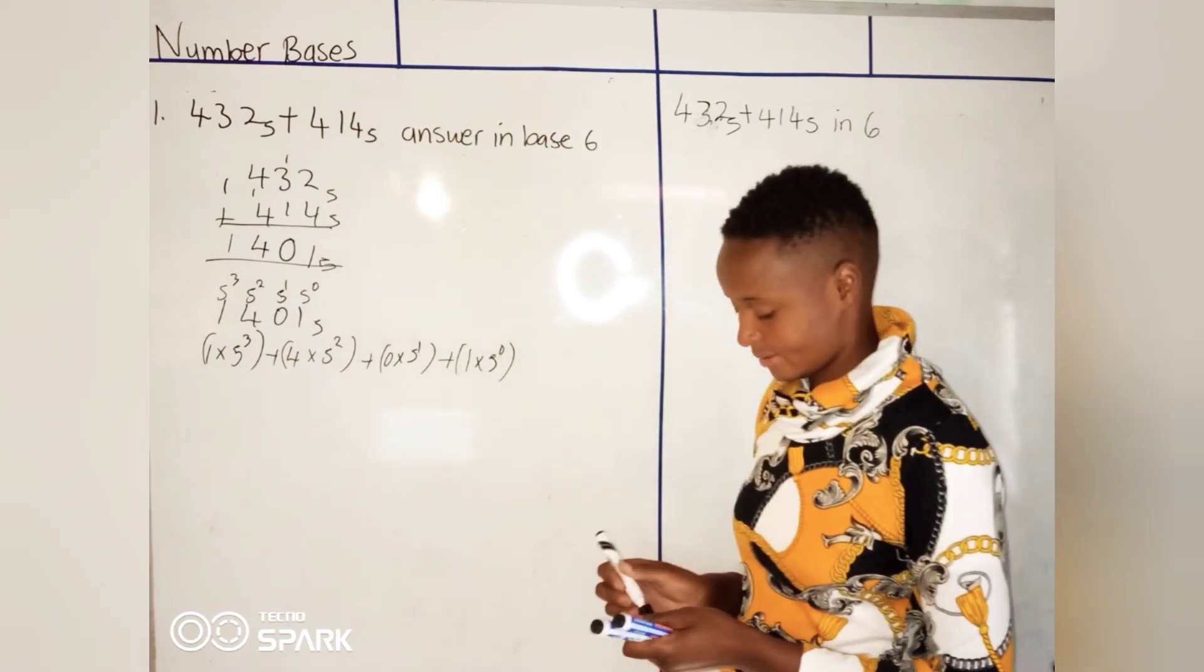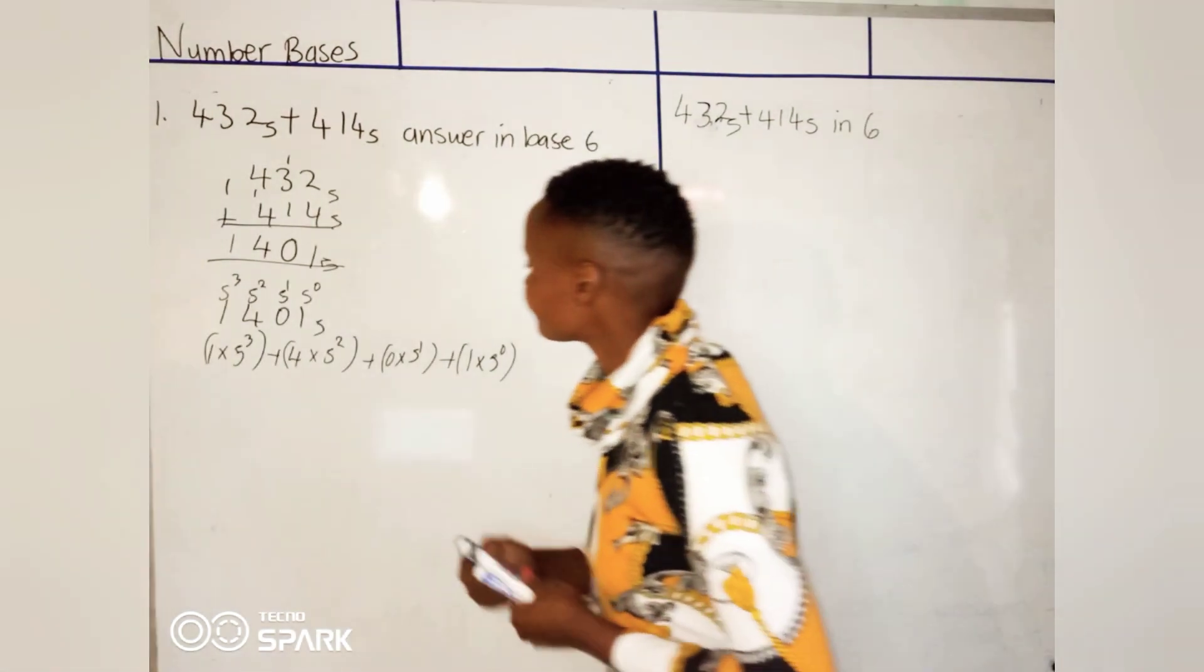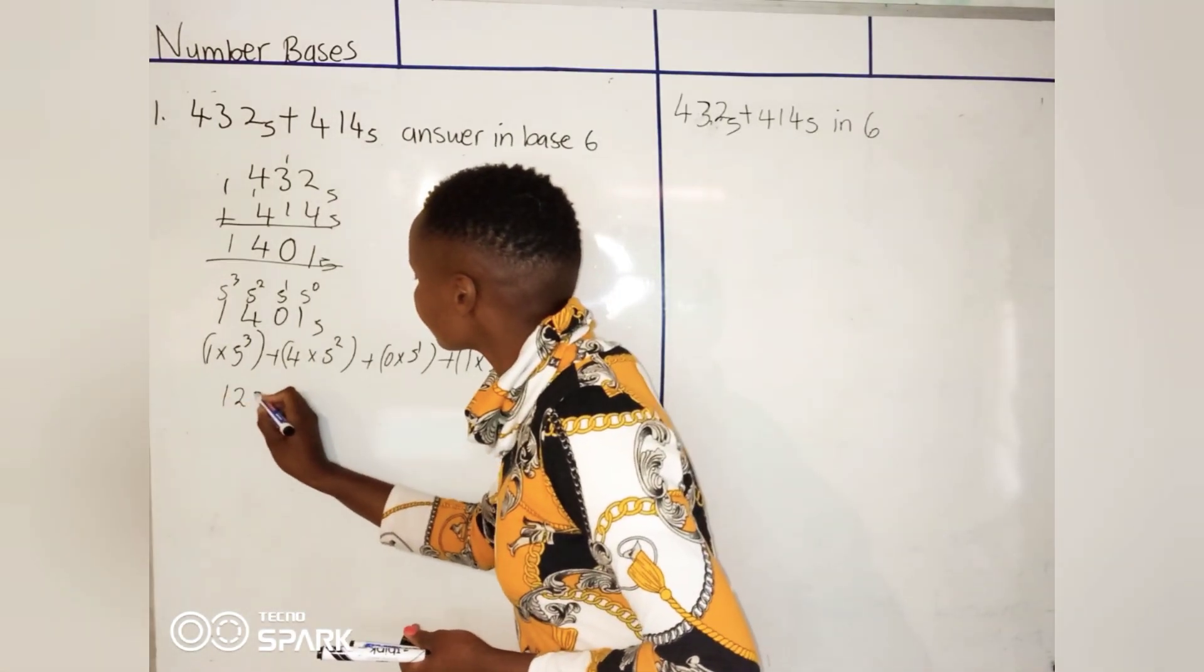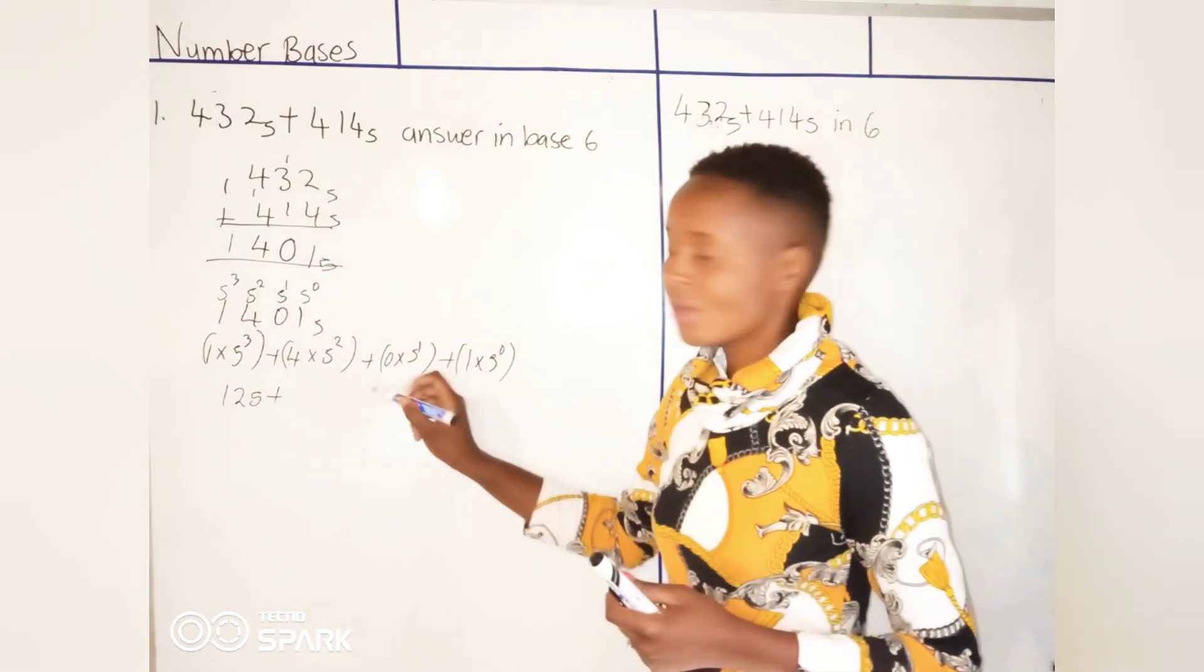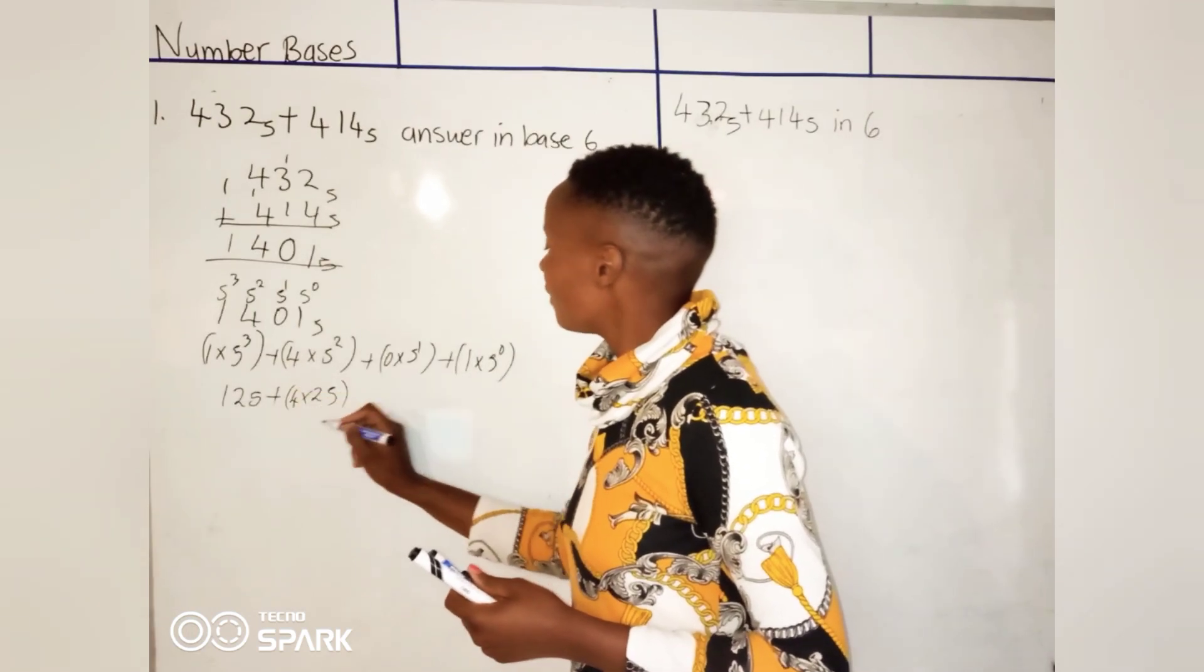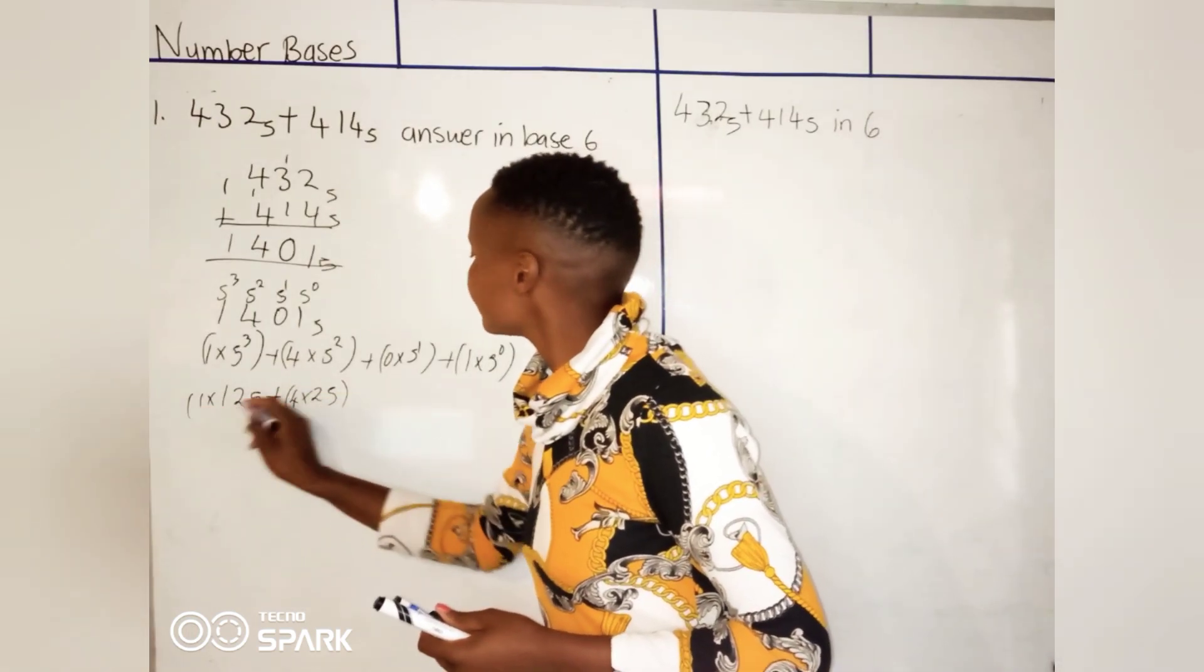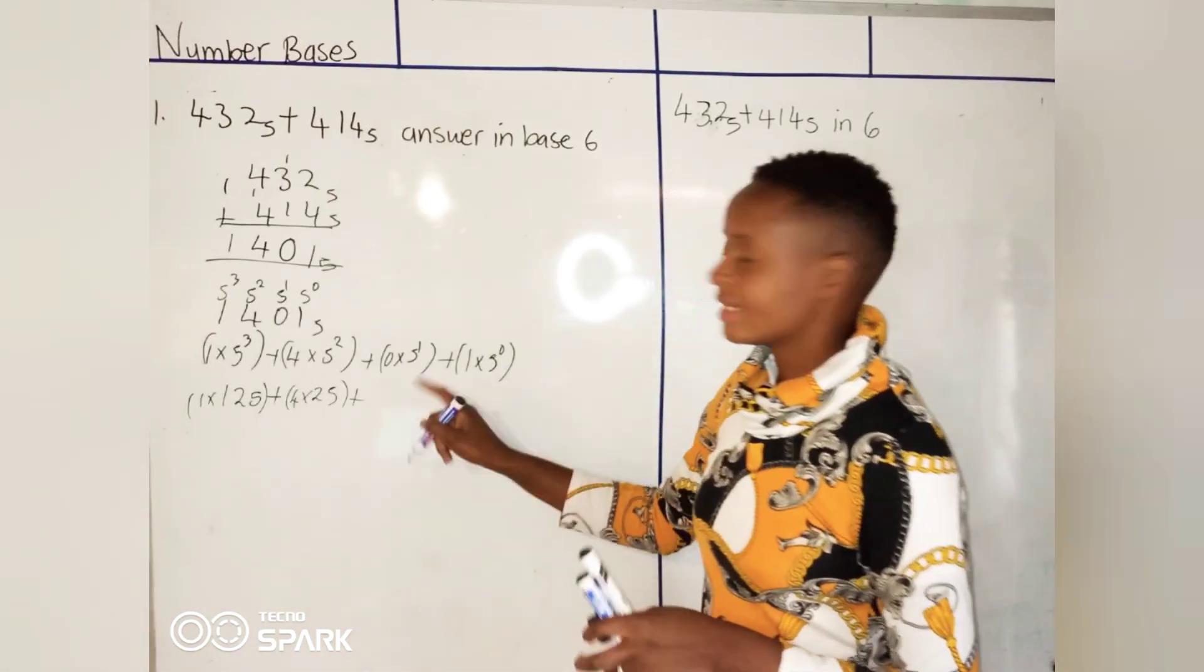What's 5 to the power 3? That's 125 plus 4 times 5 to the power 2. 5 to the power 2 is 25, right? 25 times 4. Let me write my terms one by one so that you guys will understand.